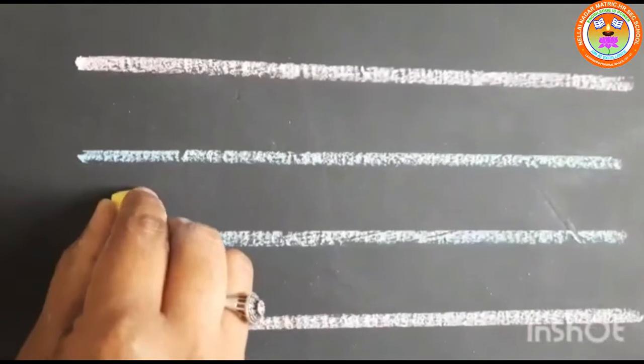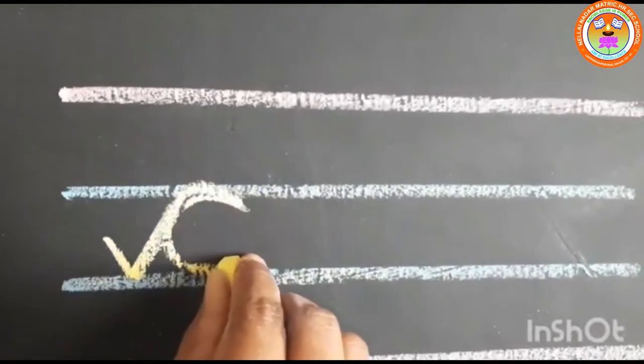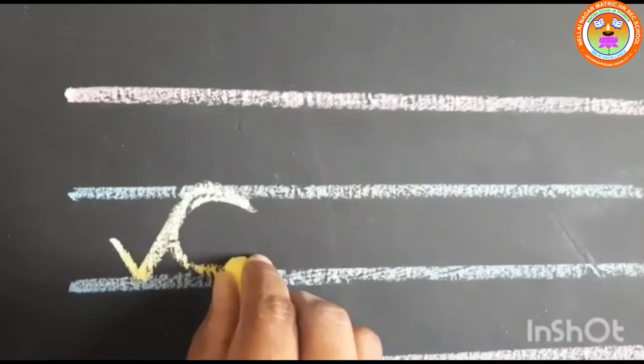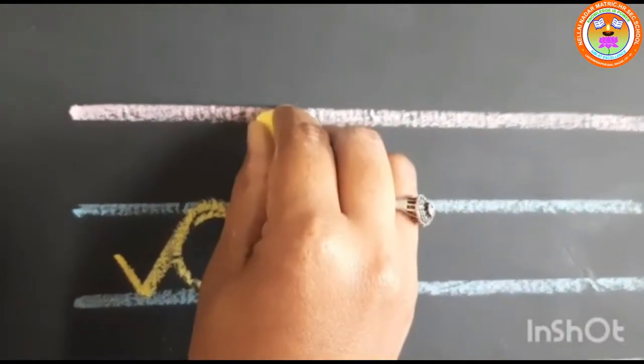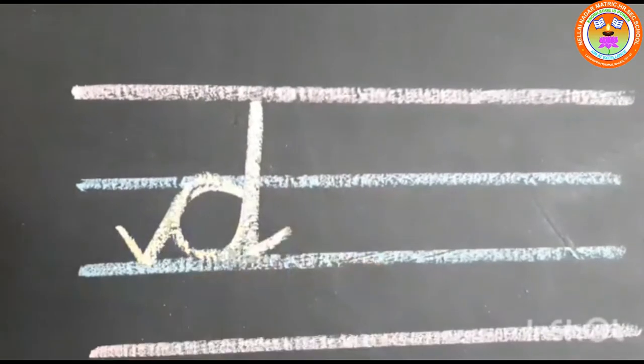We'll go to the next letter. Now we will write cursive small letter D. To write D, keep your pencil in the middle. First write C, and without taking the pencil, go, touch the top red line and same line come down, put tail.